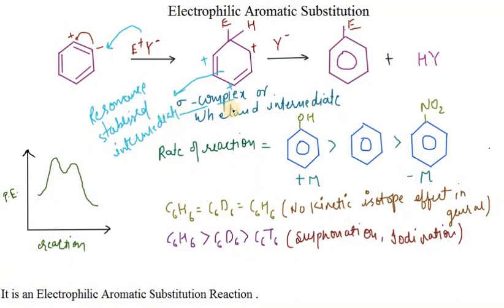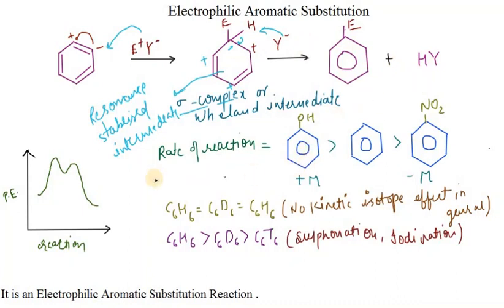To proceed the reaction further, we need to keep supplying temperature. The negative charge will deprotonate the ring, and the negative charge combining with the positive charge reforms the benzene ring, with the formation of an acid as a byproduct.